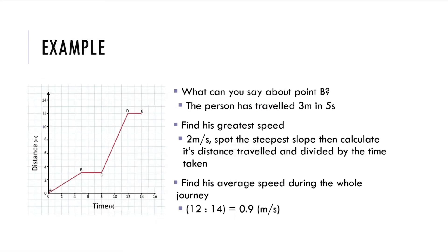We have an example. The first question: What can you say about point B? If you look at the graph, you can see that the person has traveled 3 meters in 5 seconds. Second question: Find its greatest speed. The answer is 2 meters per second. To do this, first spot the steepest slope, then calculate its distance traveled and divide it by the time taken. Lastly, find its average speed during the whole journey. Just take 12 divided by 14 and you got 0.9 meters per second.